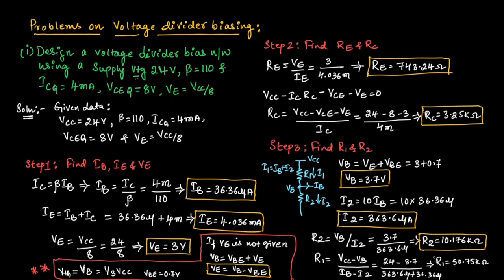The value of R1 is 50.75 kilo ohms. In the problem, it is given to design a voltage divider circuit. After finding all these values, you need to draw the voltage divider circuit and substitute all the values which you have calculated.